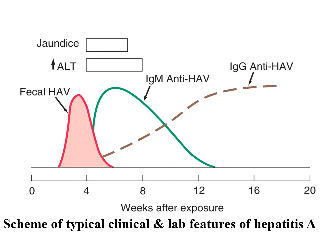This is the scheme of typical clinical and laboratory features of Hepatitis A. Jaundice begins at about the fifth week and lasts until about the eighth week. Increased ALT begins about the fifth week and lasts until the ninth week. Fecal Hepatitis A virus continues rising until weeks 16, 17, and 18.